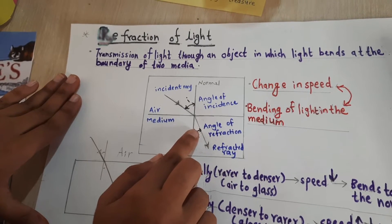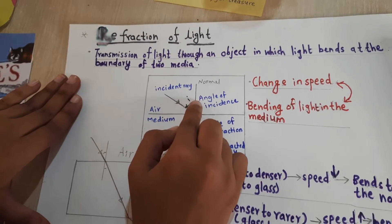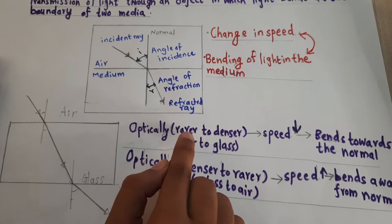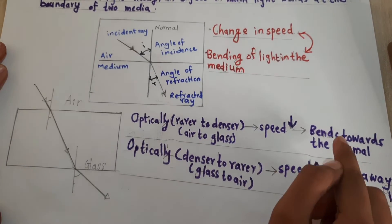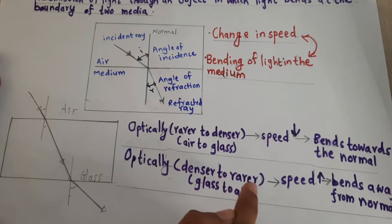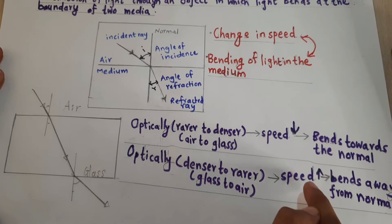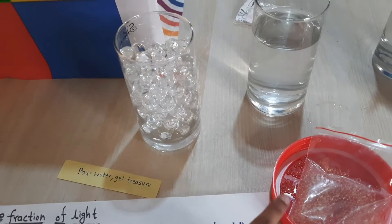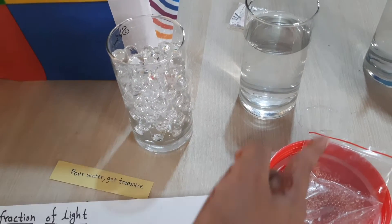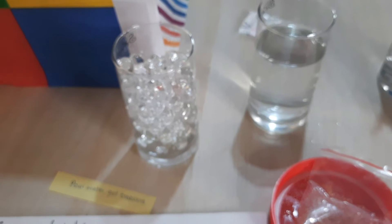This is the incident ray and this is the refracted ray. This is the angle of refraction and this is the angle of incidence. When light travels from rarer to denser — air to glass — speed decreases and bends towards the normal. Denser to rarer — glass to air — speed increases and bends away from the normal. So these are water beads, and when we pour water in them, the refractive index of water and water beads are the same, so the water beads look disappeared.